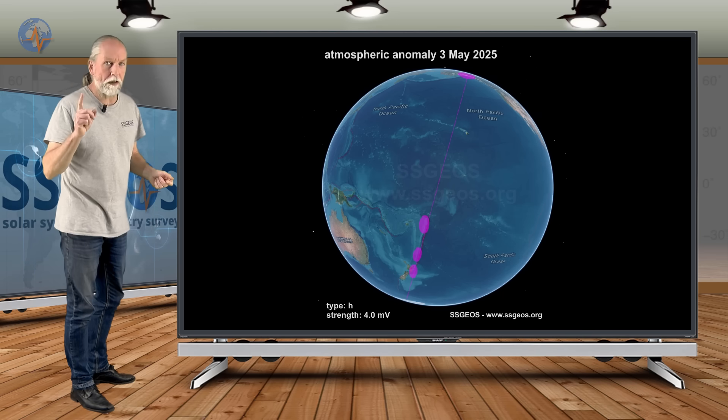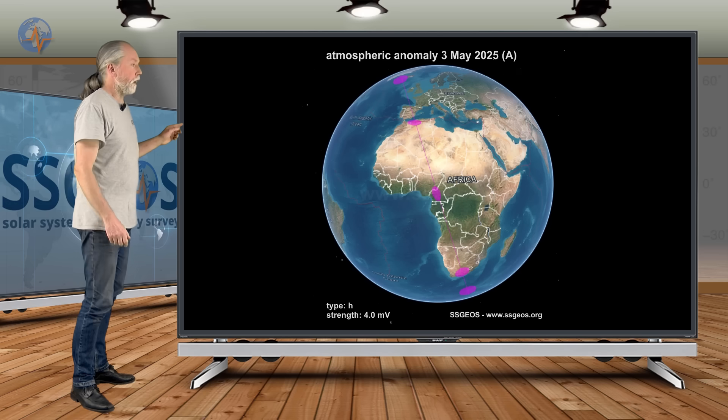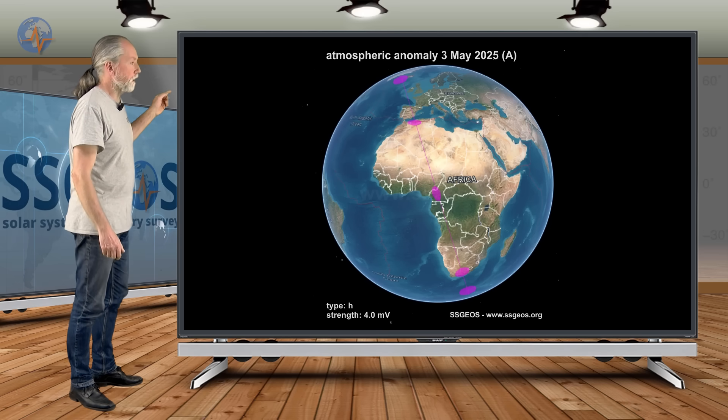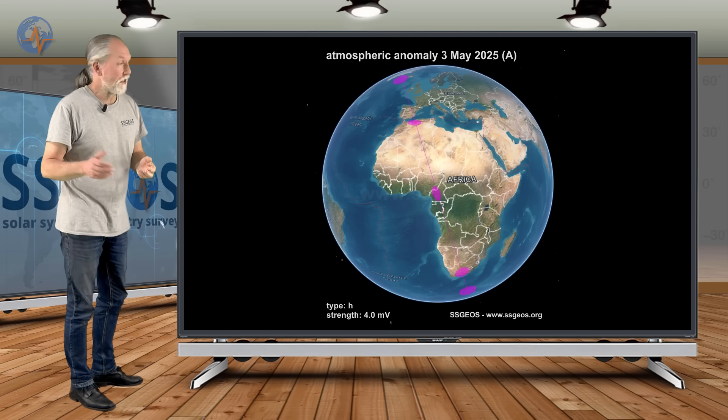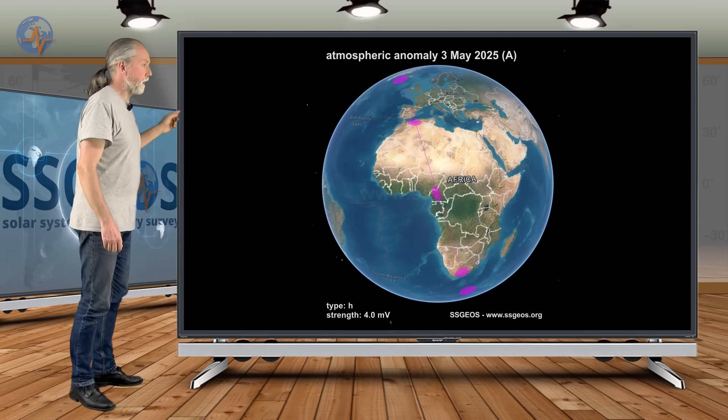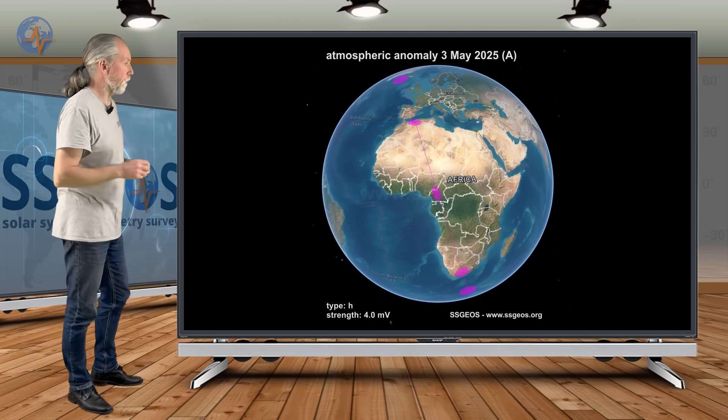This is four millivolts, a really significant atmospheric anomaly. On the other side of the Earth, I marked south of Iceland, in particular North Africa, Algeria. Morocco had a 4.6 recently following that atmospheric anomaly over Africa and to the south of Africa. And again, this is four millivolts, very strong.